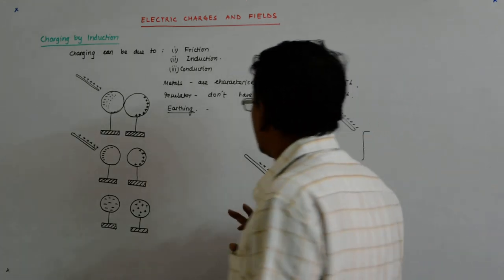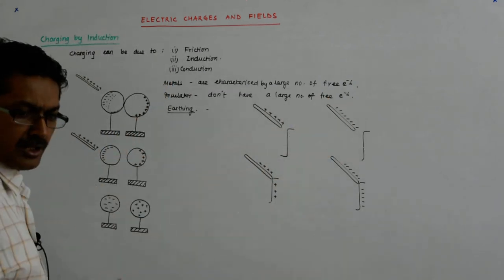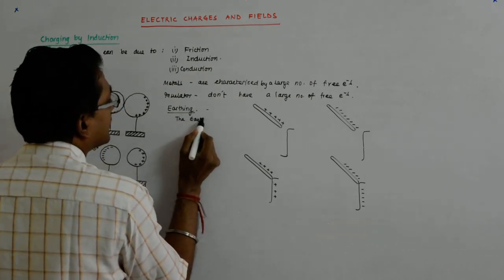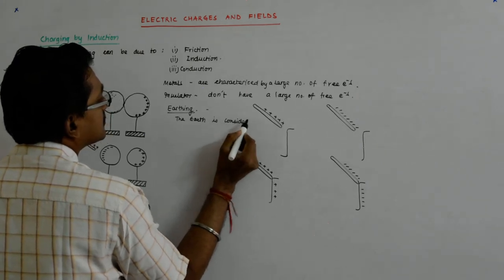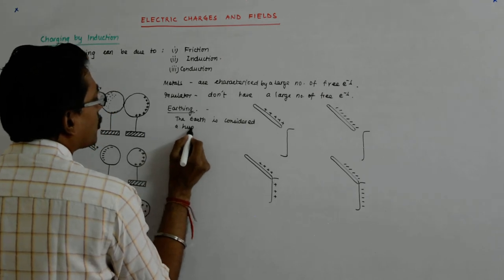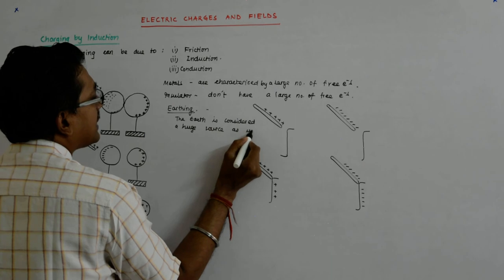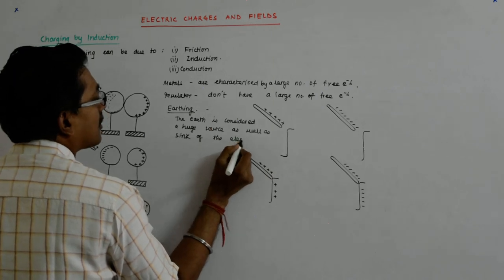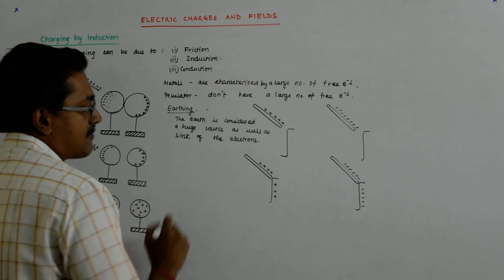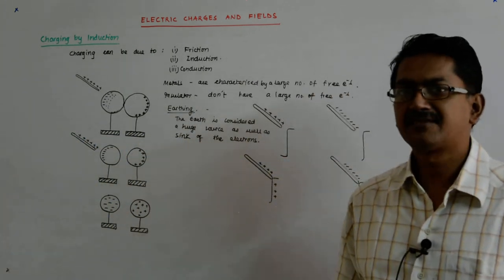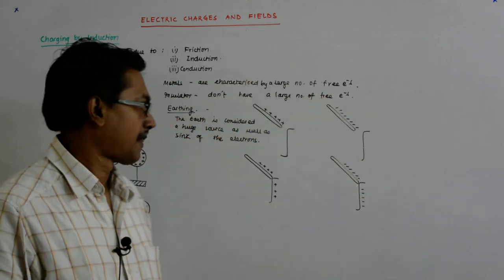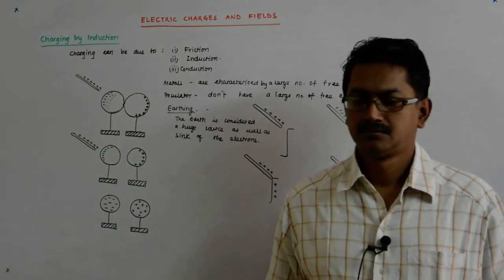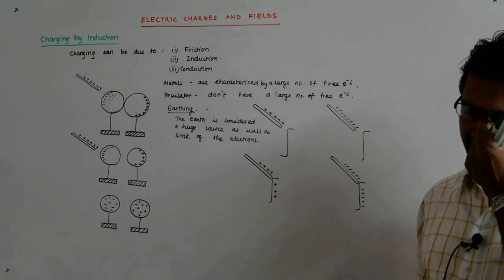Now if you have understood this phenomenon, we can come to earthing. The earth is considered a huge source as well as a sink of electrons — a huge, huge source as well as a sink.